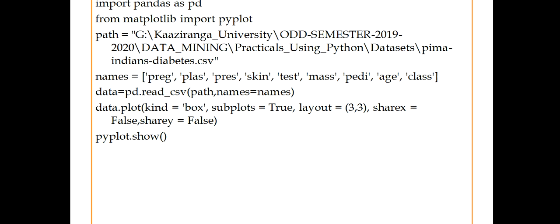Then names means different types of attributes. We have preg, plas, pres, skin, test, mass, pedi, age, class. Then we need to create a variable and store this. So data is that variable. pd.read_csv means read CSV we are using because we are reading comma separated values. Then path, then names equals names. Names as it is, this is what I mean by this line.